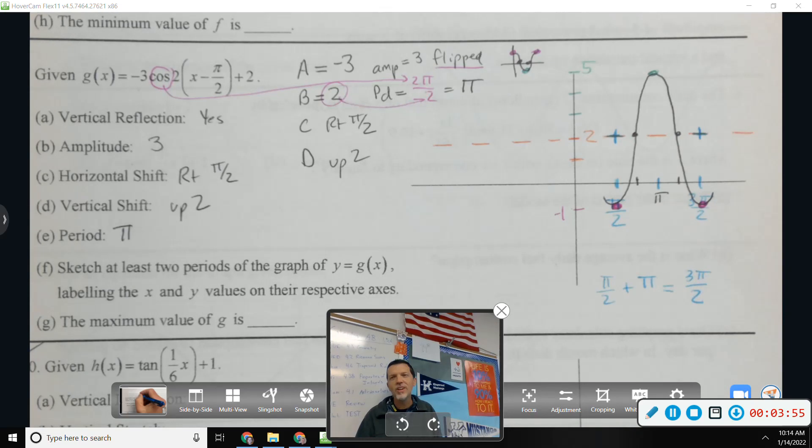Like A, B, C, and D all have values that do something to the graph. Got it?